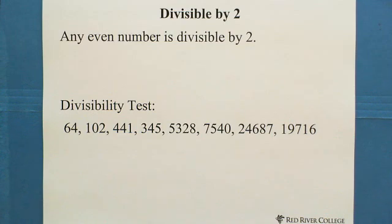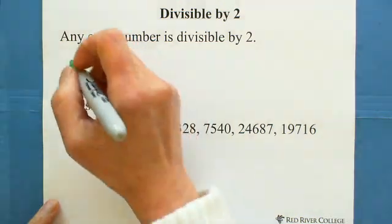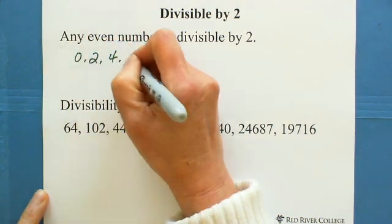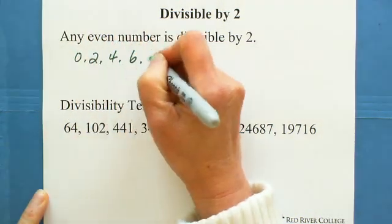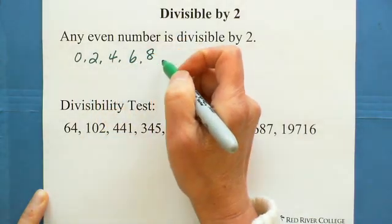First, let's see what the divisibility test for 2 is. Any even number is divisible by 2. An even number ends with 0, 2, 4, 6, or 8.